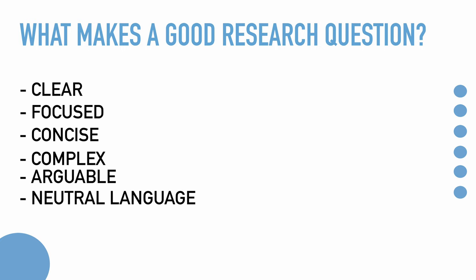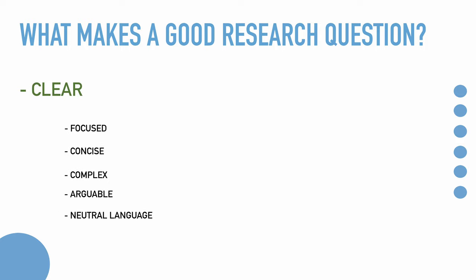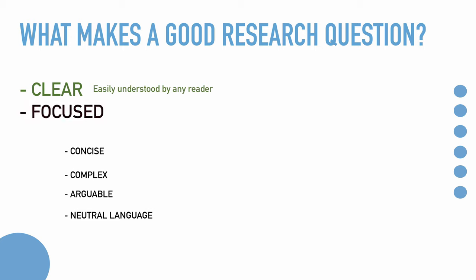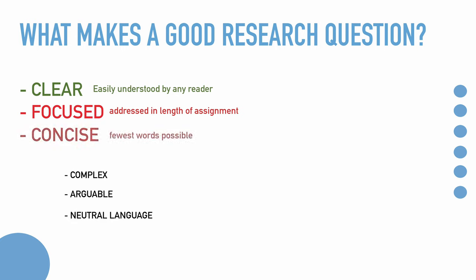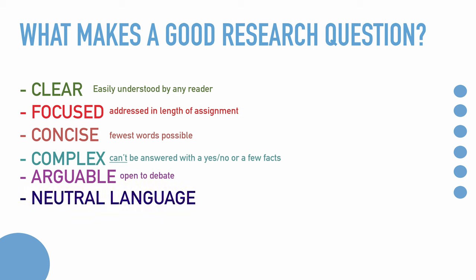A good research question should also contain neutral language so that you can minimize bias. If a question is clear, it can be easily understood by any reader regardless of their knowledge level. If focused, it can be addressed in the page length of your assignment. If concise, it has the fewest words possible. If complex, it can't be answered with a yes or no or a few facts — it needs multiple sources and ideas. If arguable, proposed solutions are open to debate. Neutral language helps keep our research as unbiased as possible, preventing us from only researching solutions we believe will work rather than finding all available information.